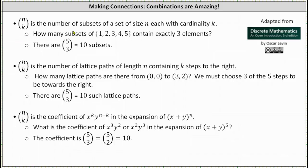Next, n choose k is a number of subsets of a set of size n, each with cardinality k. As an example, how many subsets of the set with elements one, two, three, four, and five contain exactly three elements? There are five choose three or ten subsets.